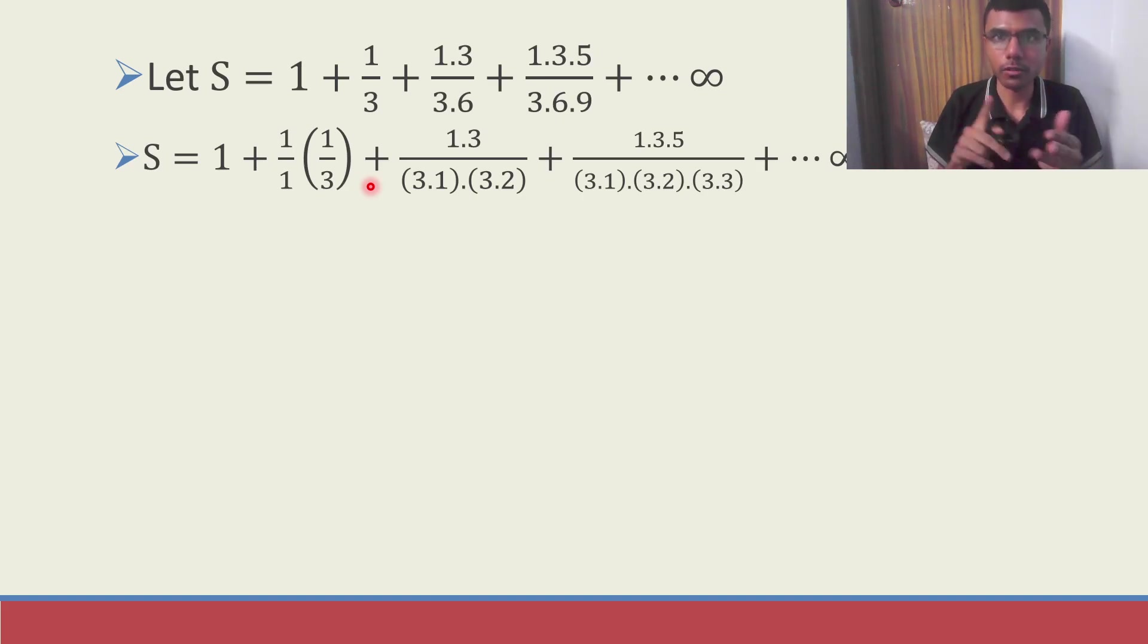1 factorial, 2 factorial, 3 factorial. I want it in that way because that's how my format is. So I'm going to make it as 1 factorial. Now next, you might think how I'm going to get 2 factorial. Now see, here I have in the denominator 3 into 6.